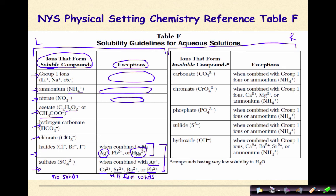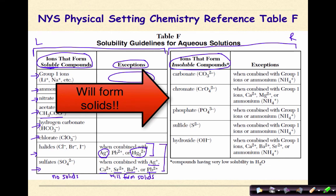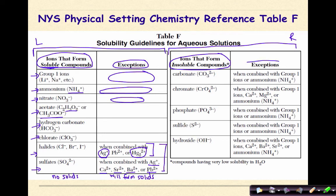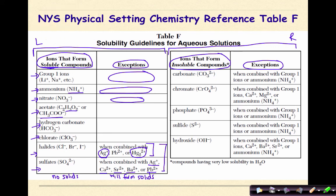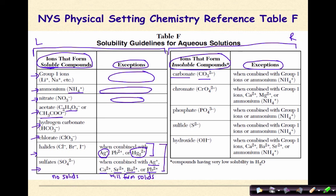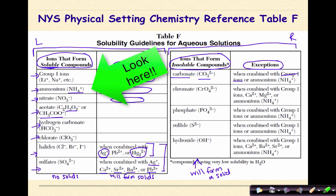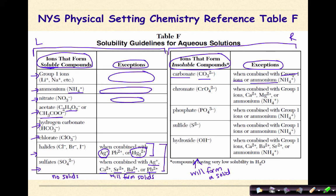Now let's look at the box on the right — these are ions that form insoluble compounds, meaning they will form a solid. We have exceptions to these rules as well, and many correspond to the left box. Carbonate (CO3-2) is typically insoluble and will form a solid. The exception is when it is combined with a group one ion like sodium or lithium, or ammonium — which makes sense, because those ions in the left box have no exceptions and are always soluble.